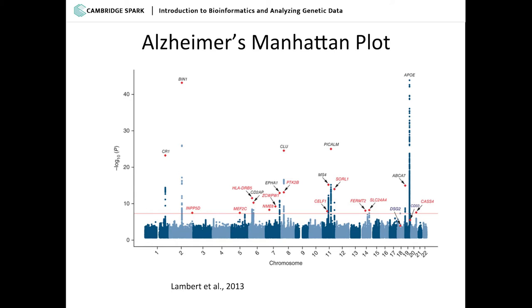When you do a genome-wide association study, you end up with something called a Manhattan plot, because it looks like the skyline of Manhattan. Across the x-axis is the whole genome, separated into chromosomes — you have 23 of them, two copies of each. They've only shown chromosomes 1 through 22 here because the last one is the X and Y chromosome, which are a lot harder to analyze due to complicated population dynamic issues. The y-axis is the negative log of the p-value — basically, the higher it is, the stronger the statistical signal that this site is associated with whatever you're studying.